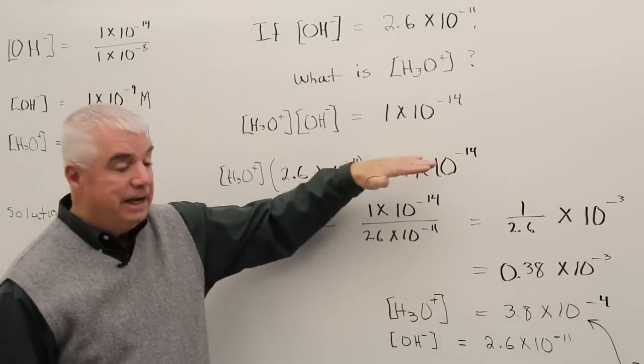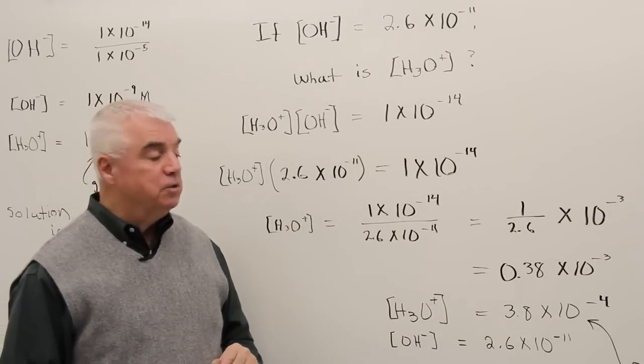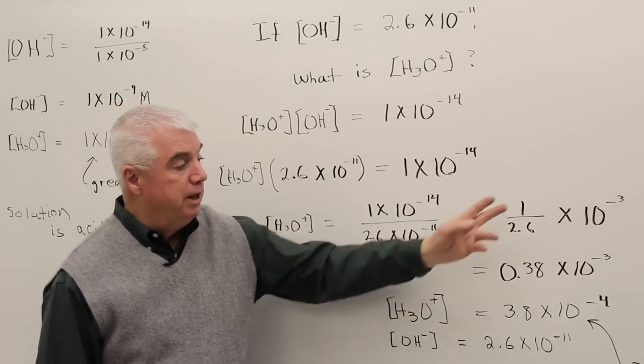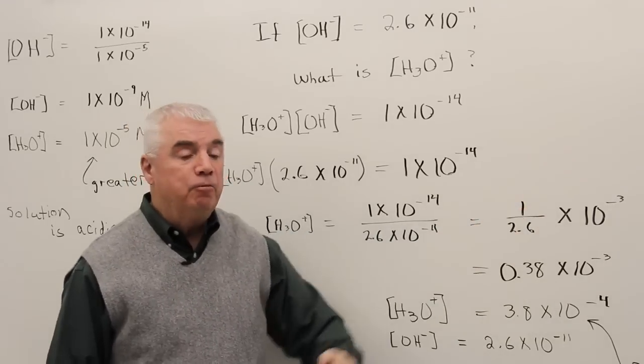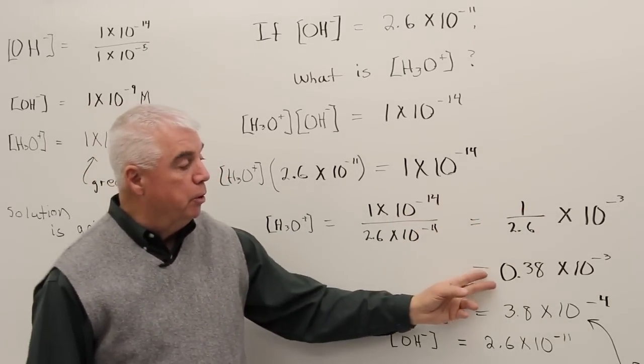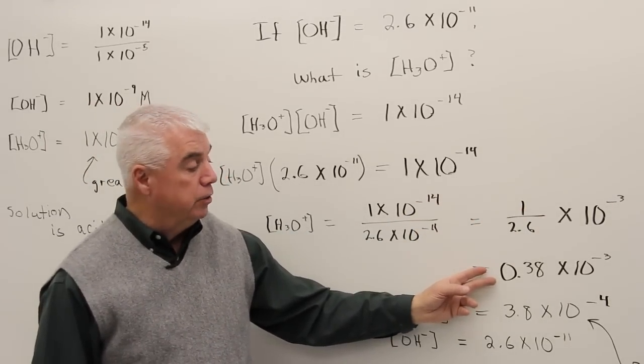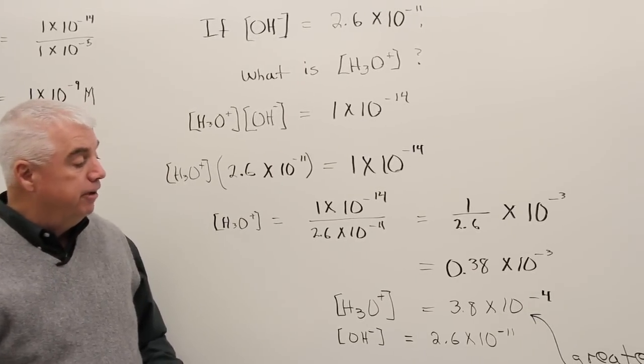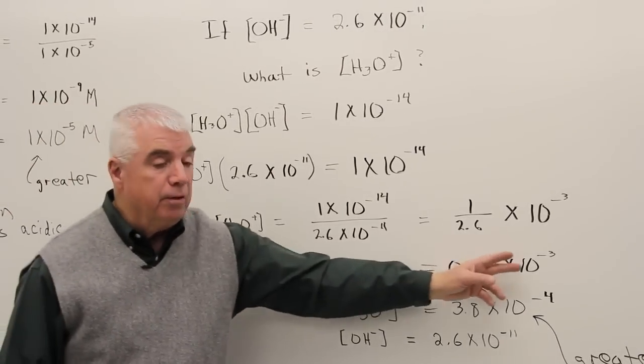Or if I take that 11 up, it changes sign. A plus 11 and a minus 14 would be a minus 3. So we're halfway there. 1 over 2.6, then I divide on my calculator, comes out to 0.38 to two significant figures, times 10 to the minus 3.